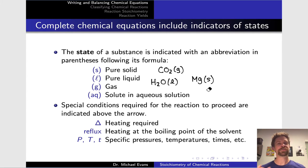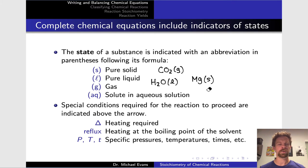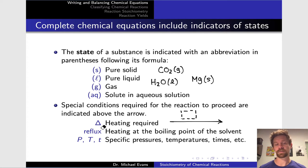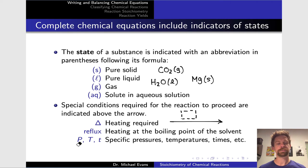There's also the arrow in the middle that separates reactants and products. Any special conditions required for the reaction to proceed are listed above or sometimes below the arrow. For example, the delta symbol indicates that we have to heat the reactants to get the reaction to go. Reflux is a special type of heating at the boiling point of the solvent. You'll also see specific pressures, temperatures, and reaction times above or below reaction arrows from time to time.